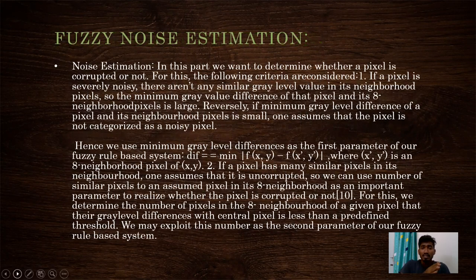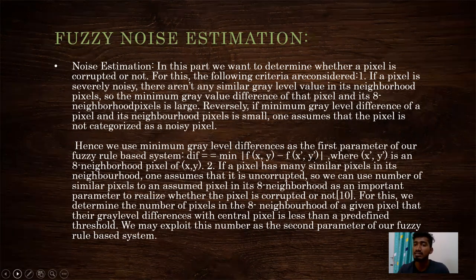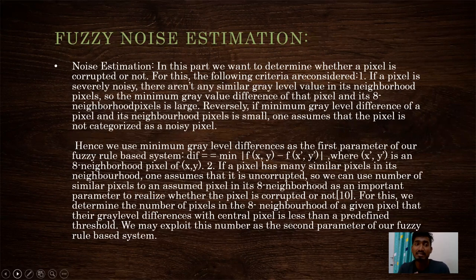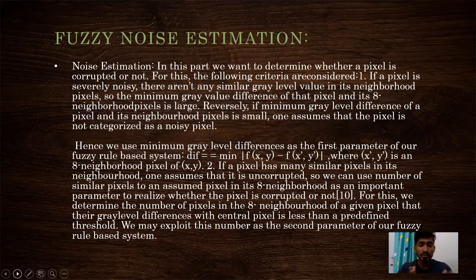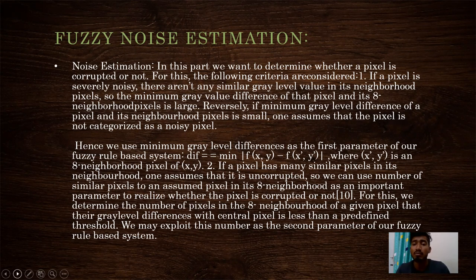Fuzzy noise estimation: in this part, we want to determine whether a pixel is corrupted or not. The following criteria are considered. Number one, if a pixel is severely noisy, there aren't any similar gray level values in its neighboring pixels. So the minimum gray value difference of the pixel and its eight-neighborhood pixels is larger. Reversely, if the minimum gray level difference of a pixel and its neighborhood pixel is small, one assumes that the pixel is not categorized as a noisy pixel. Hence, we use minimum gray level difference as the first parameter of a fuzzy rule basis. The difference is equal to min of f(x, y) minus f(x', y'), where x' and y' is an eight-neighborhood pixel of (x, y).